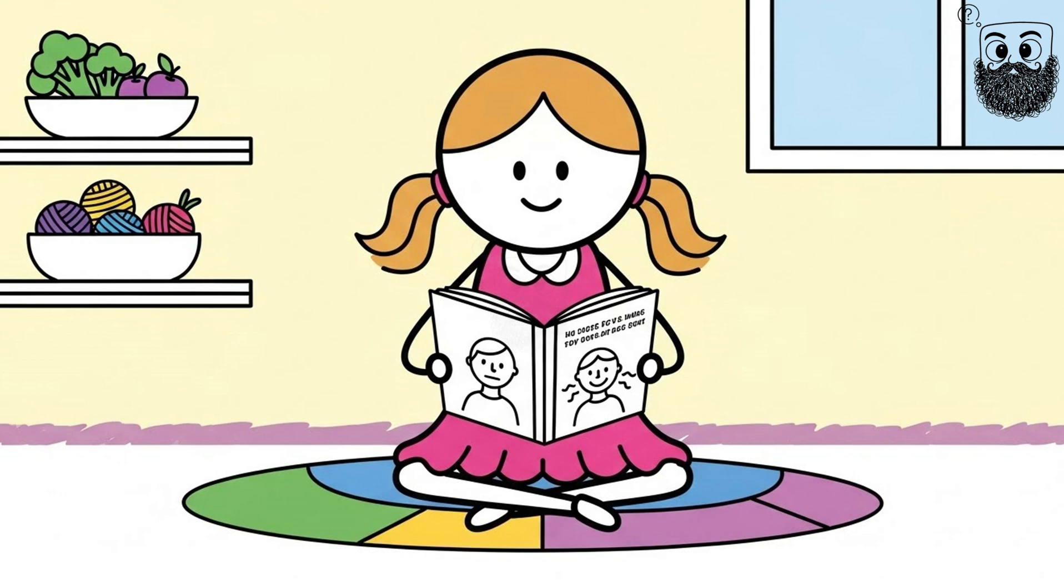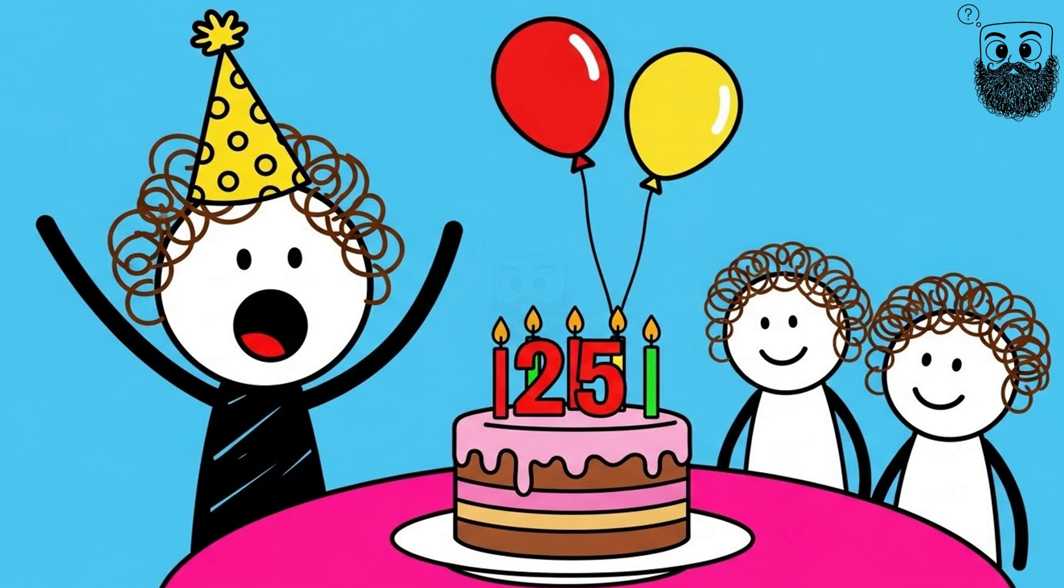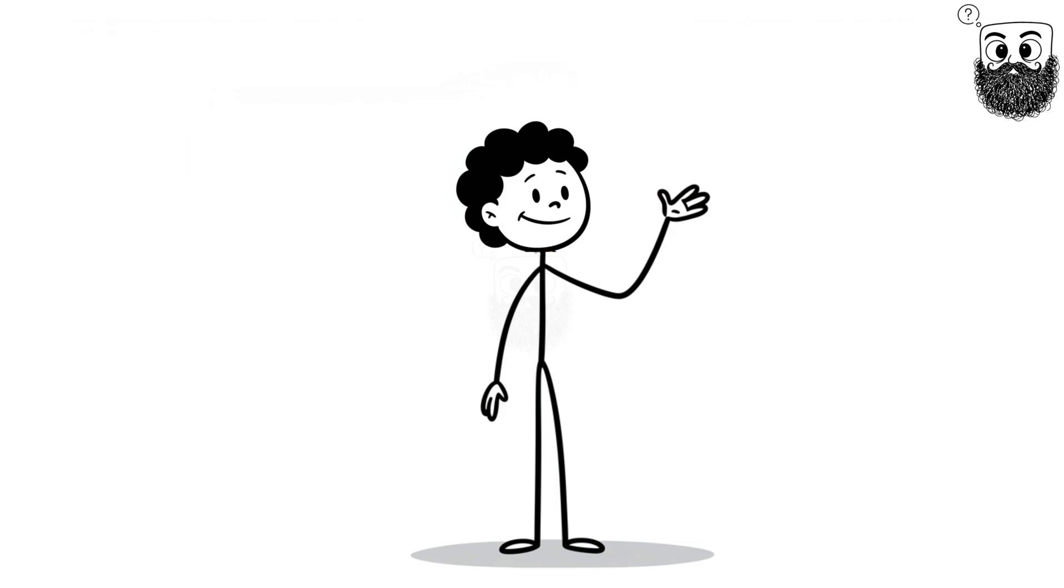Some people don't even realize this isn't normal until they're adults. They think everyone sees the world through static. Imagine finding out at 25 that most people don't have a light show playing in their vision 24/7. So next time your screen glitches out, just remember, some people's brains are permanently stuck on that fuzzy channel.